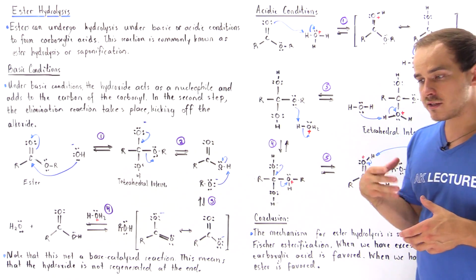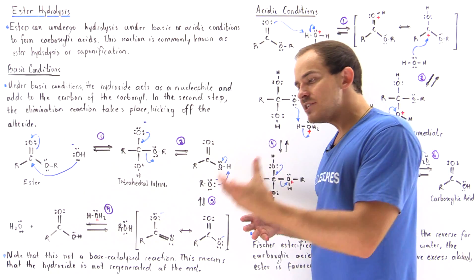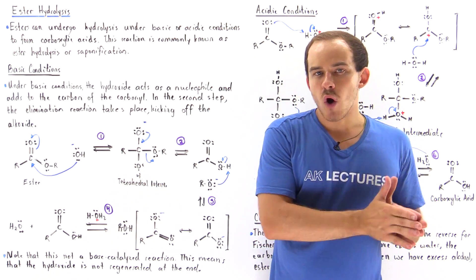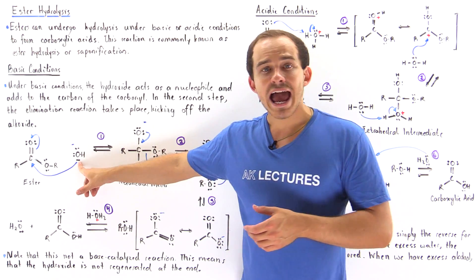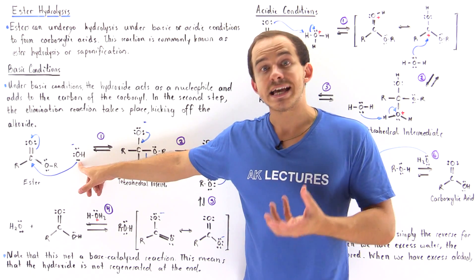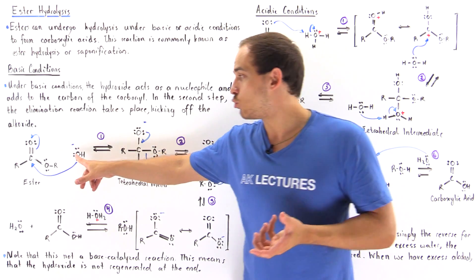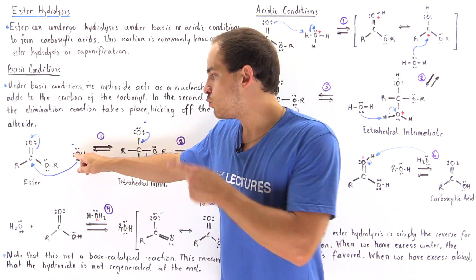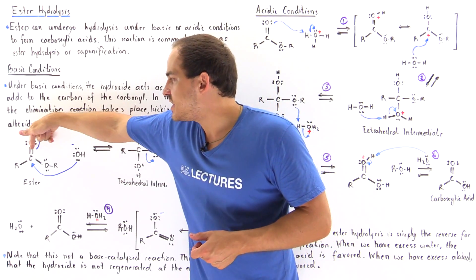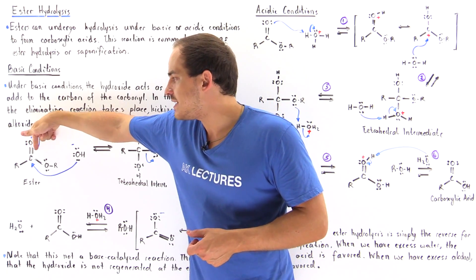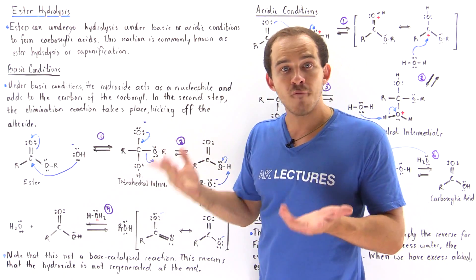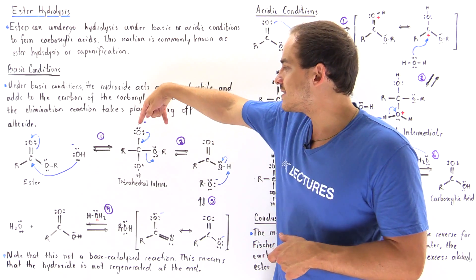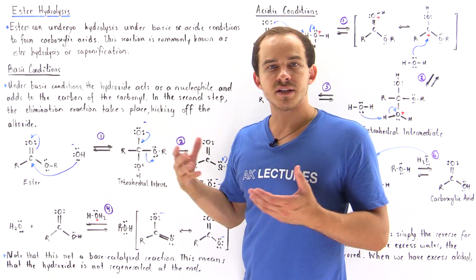Under basic conditions, we have an addition-elimination reaction taking place. In step number one, the hydroxide acts as our Lewis base, as the nucleophile, reacting with our ester, the Lewis acid. We form a bond between the oxygen and the carbon, displacing the pi bond and placing the electrons onto this oxygen. We form a tetrahedral intermediate ion that contains a negative charge on this oxygen.